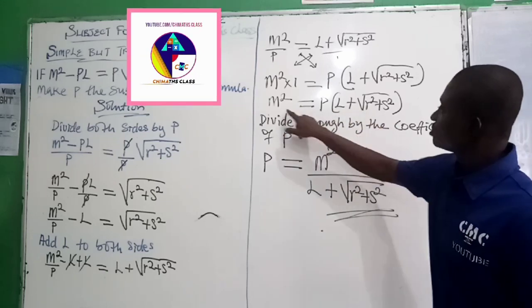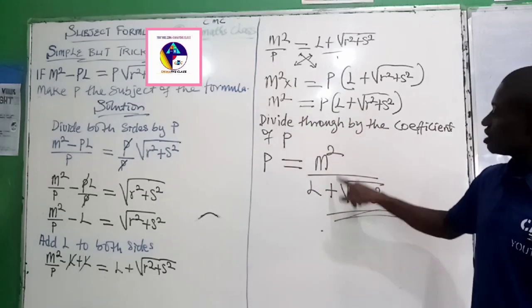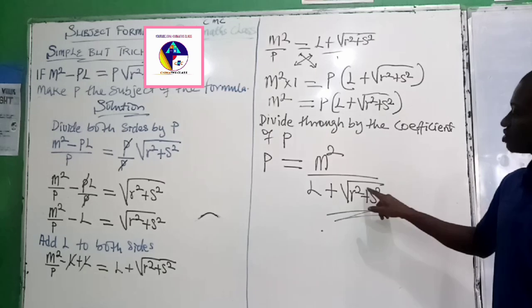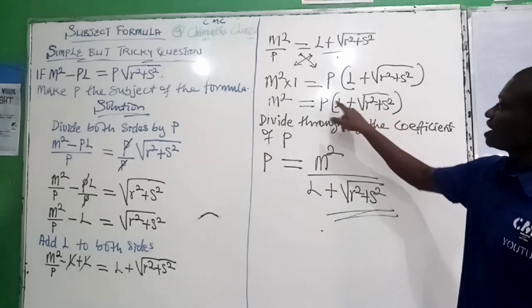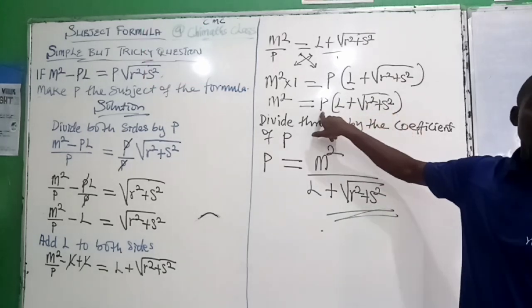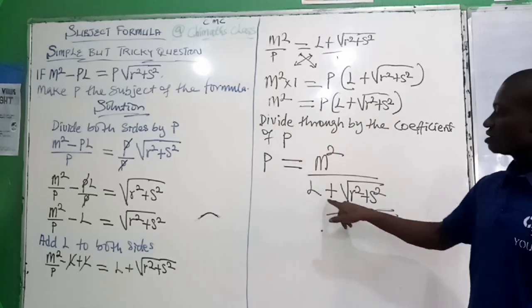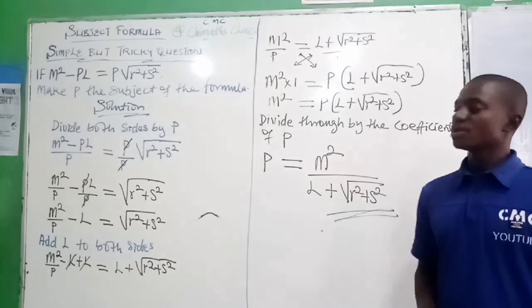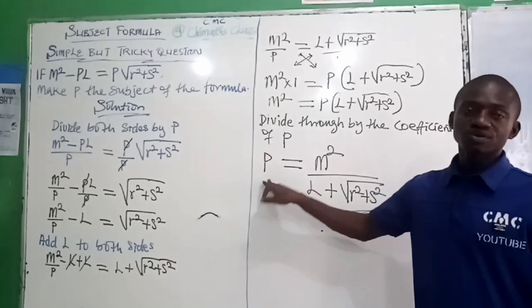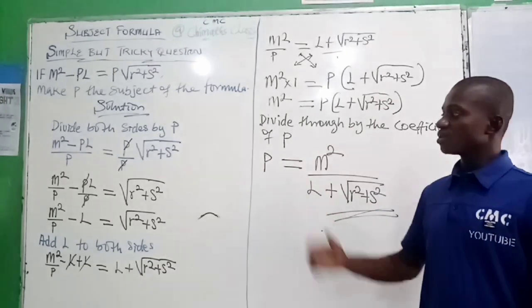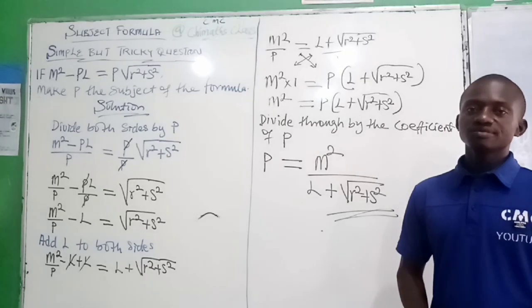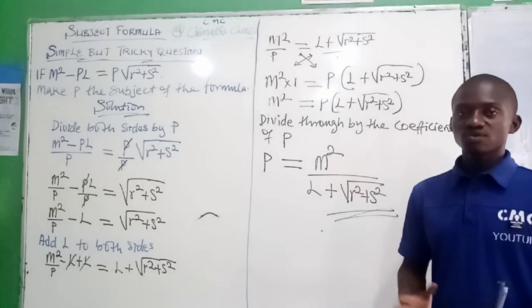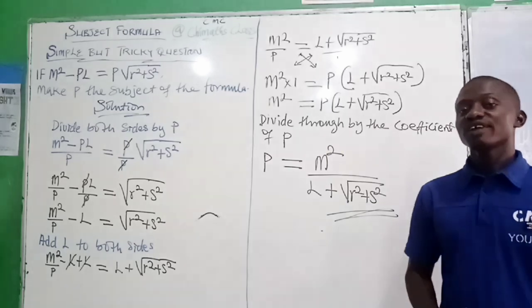So when we use this to divide M squared, we have M squared over L plus root R squared plus S squared. But when we use it to divide this place, you cancel out and P alone will be M squared over L plus the root of R squared plus S squared. We have succeeded in isolating P. So this is what we call subject formula.